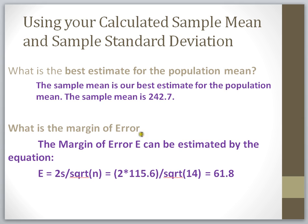Next, what is the margin of error? Calculate the margin of error for a 95% confidence interval. Using means and standard deviation, the formula is two times the sample standard deviation divided by the square root of the sample size. That's two times 115.6, divided by the square root of 14. Taking the square root of 14 first, then multiplying two times 115.6, and dividing gives a margin of error of 61.8.